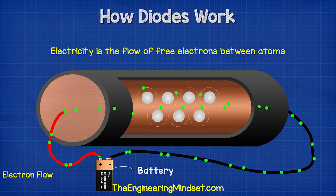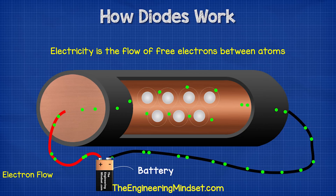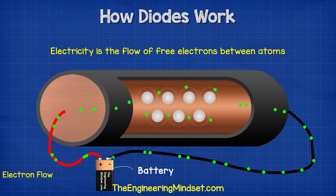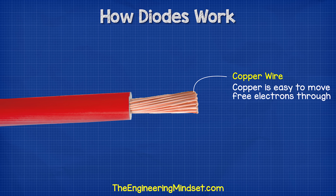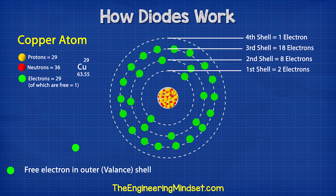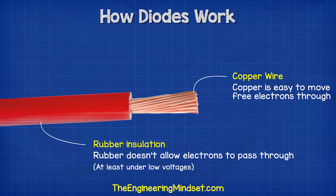As you may know, electricity is the flow of free electrons between atoms. We use copper wires because copper has a lot of free electrons which makes it very easy to pass electricity through. We use rubber to insulate the copper wires and keep us safe because rubber is an insulator, which means its electrons are held very tightly and they can't therefore move between other atoms.